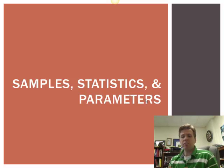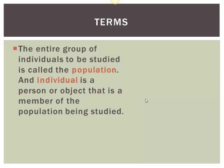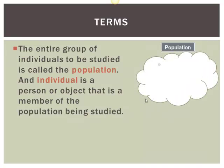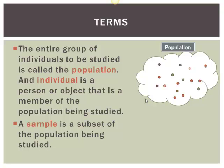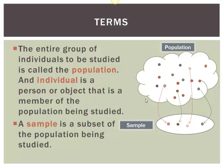Now, looking at samples, statistics, and parameters — there's some terminology here. The entire group of individuals to be studied is called the population. An individual is a person or object that is a member of that population being studied. A sample is the subset from this population. It's a nice visual of when we're looking at an observation — we got them from a sample, which was taken from a population.